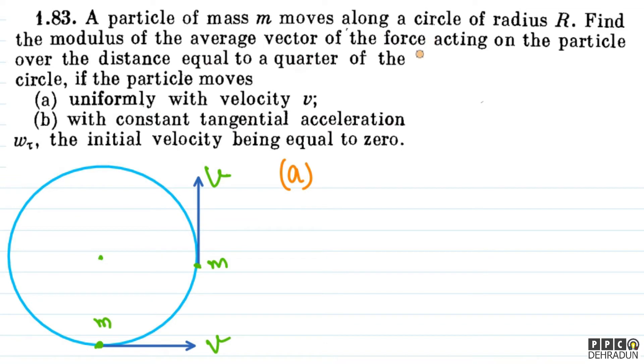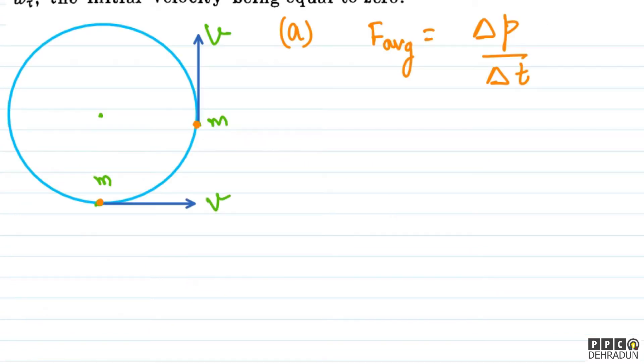So first I will solve the part in which the particle travels with uniform velocity v, meaning constant speed v. One quarter of a circle - the initial position and final position give 90 degrees angular displacement. For average vector of the force, you know F_average is change in momentum upon time taken. So if you have average force magnitude, it's the magnitude of change in momentum upon time taken.